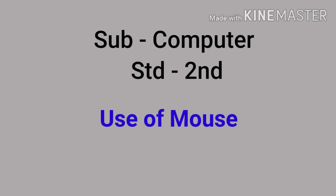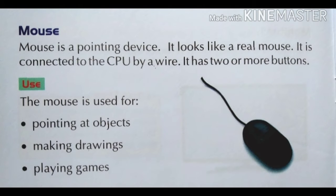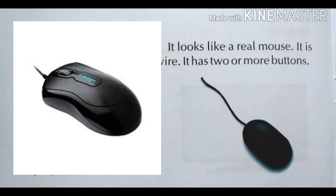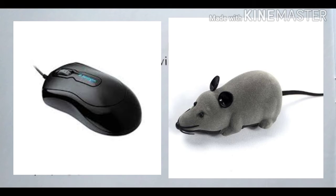Hello students, today we will learn about use of mouse. Mouse is a pointing device. It looks like a real mouse. It is connected to the CPU by a wire. It has two or more buttons. The mouse is used for pointing at objects, making drawings, and playing games.